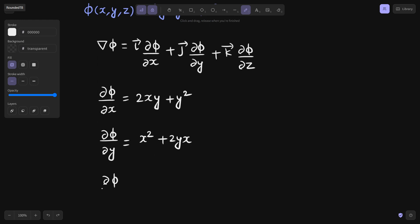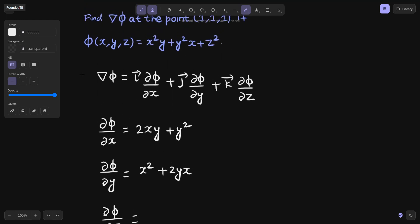Finally, ∂φ/∂z. In the first term, no term of z is there, so its derivative is 0. In the second term, similarly no term of z, so derivative is again 0. In the third term, derivative of z² is 2z.